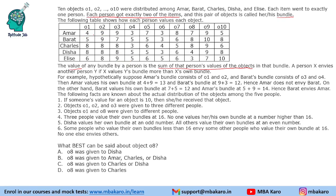The next thing, which is the most important statement and makes this set one of the most difficult sets in CAT DILR, says that a person X envies another person Y if X values Y's bundle more than X's own bundle. This statement cannot be understood by reading it alone — one needs to take an example. Suppose Amar's bundle consists of O1 and O2, and Bharat has O3 and O4.